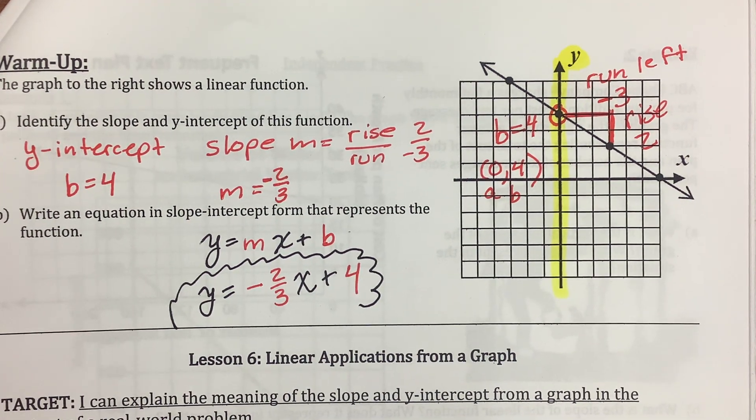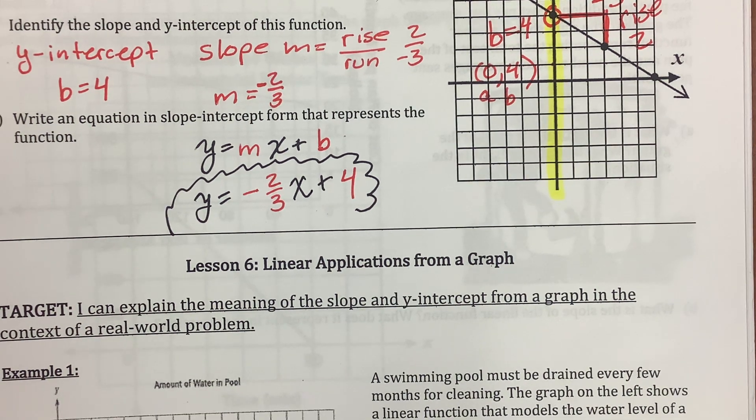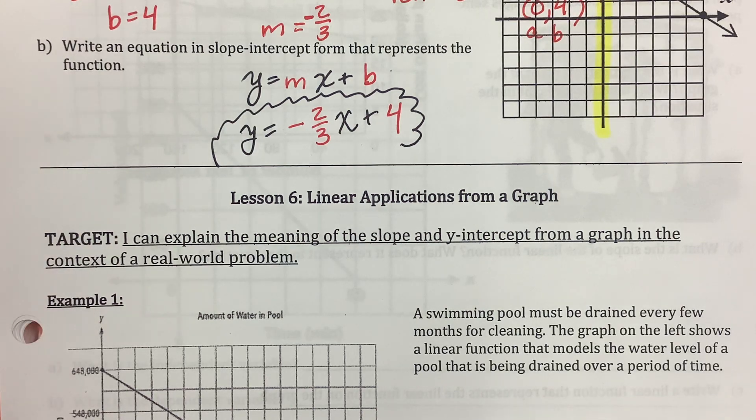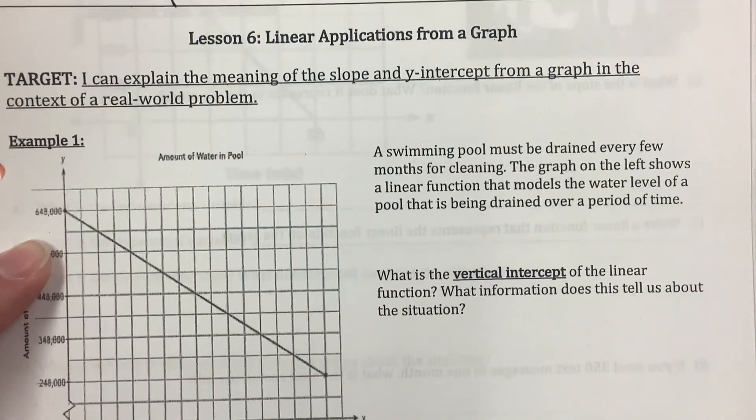The next part is the important part. I can explain the meaning of the slope and y-intercept from a graph in the context of a real-world problem. That's what application means, real-world problems. So we're going to look at this, and we're going to figure out what does it mean to be the y-intercept, and what is the slope doing to change that y-intercept?